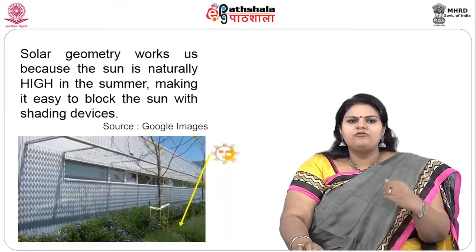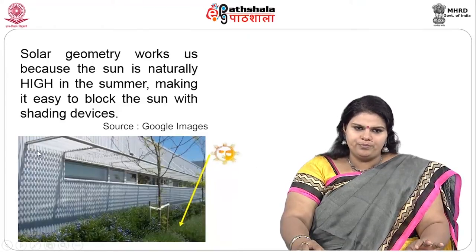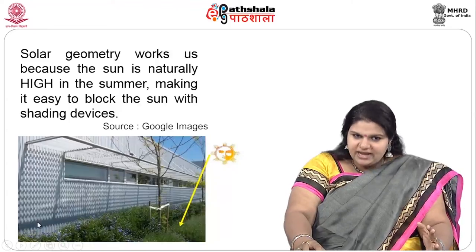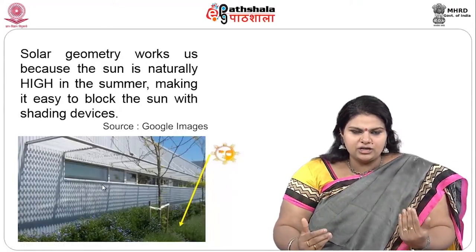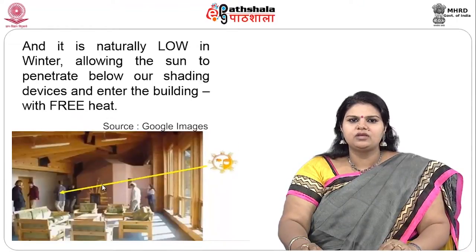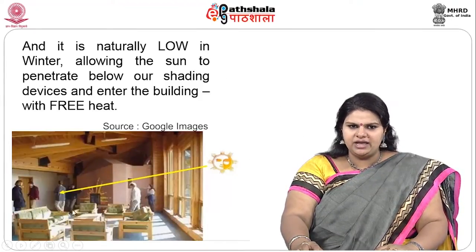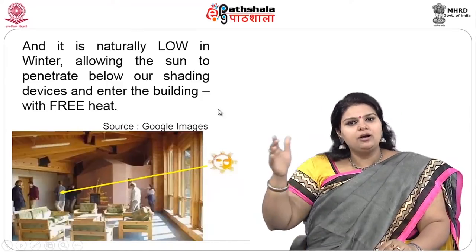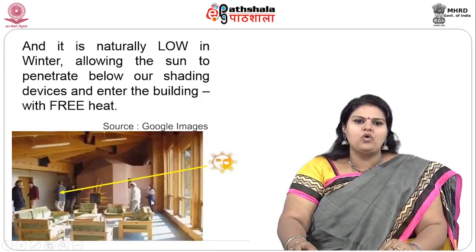Solar geometry works for us because the sun is naturally high in summer, making it easy to block with shading devices — for example, a lattice-pattern shade device that creates beautiful patterns on the wall while preventing direct heat gain through windows. It is naturally low in winter, which allows the sun to penetrate below shading devices and enter the building, essentially heating the building for free through large glazed windows.